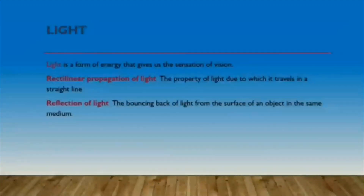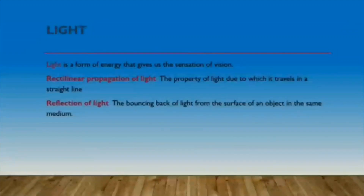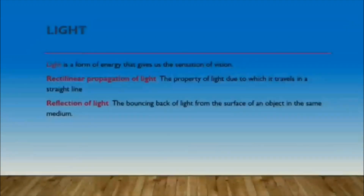Light always travels in a straight line and does not change its path. This property of light traveling in a straight line is known as rectilinear propagation of light. The word rectilinear means straight. Hence, from this word we are able to understand that light always travels in a straight line.